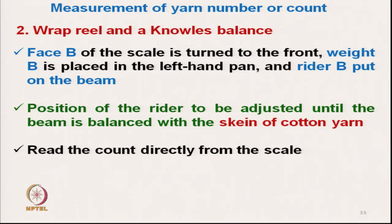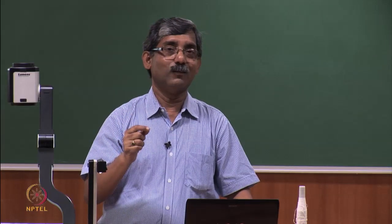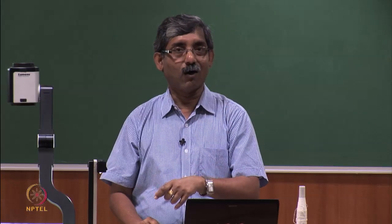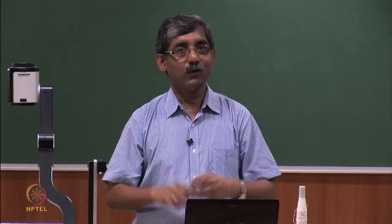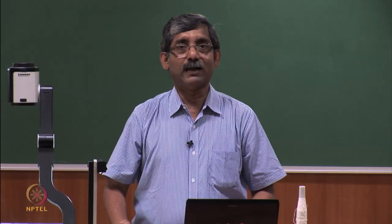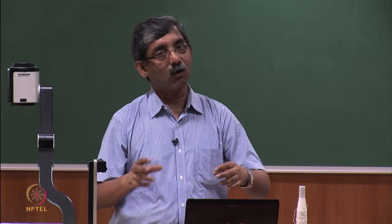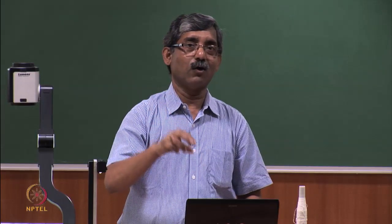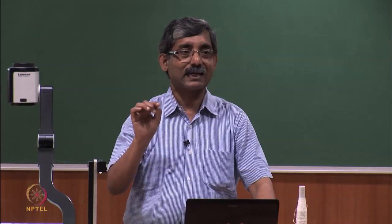If the yarn does not fall within the expected range, we determine whether it is coarser or finer and shift to the appropriate face, changing the weight and rider accordingly. This balance can also be designed to suit count systems other than cotton — one can change the mass, weight, rider, or scaling for different count systems.